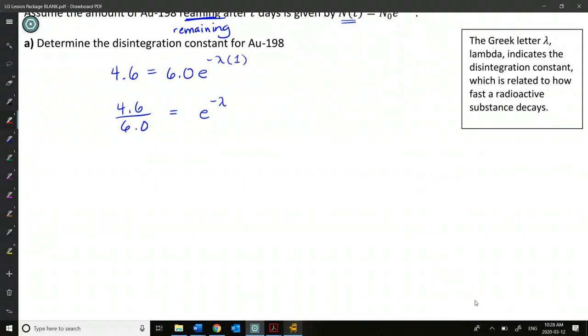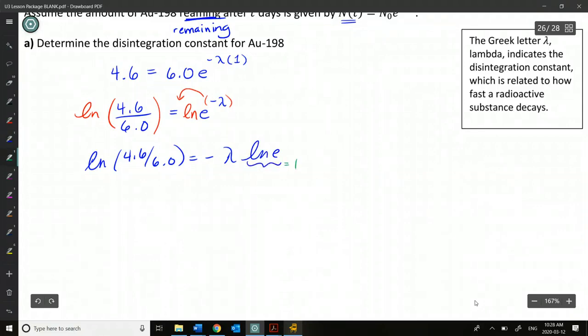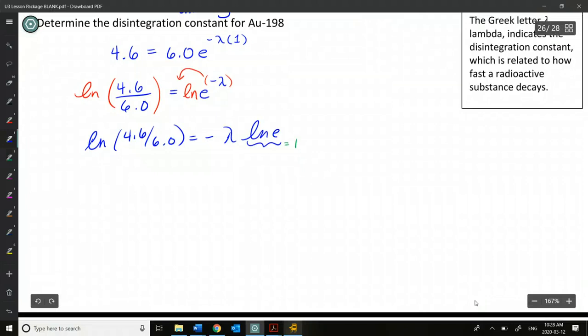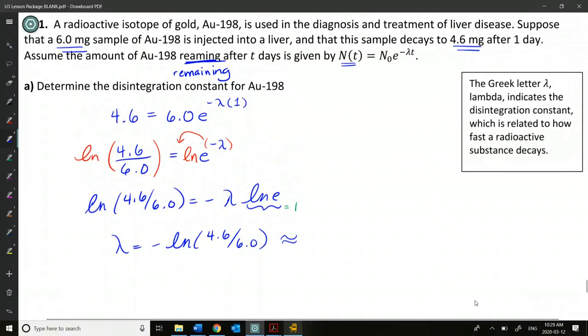Alright, so before you use logarithms here, you have to get the base and the exponent that you're trying to solve for isolated. Okay, because we're dealing with base E, we're going to take the ln of both sides, rather than taking log of both sides. So we'll ln and ln, meaning we can bring this disintegration constant down in front as a multiple.